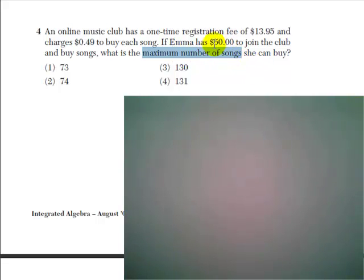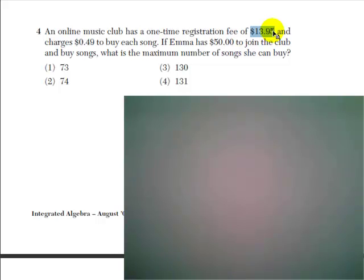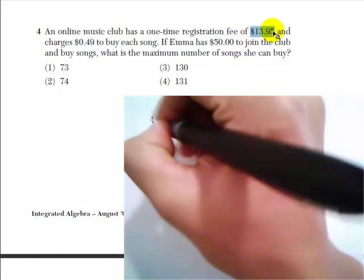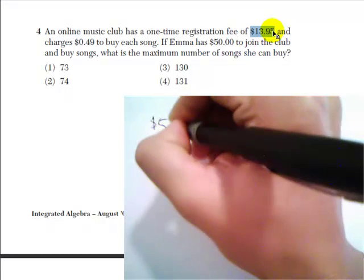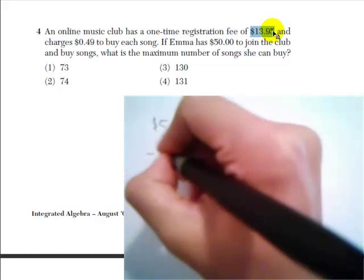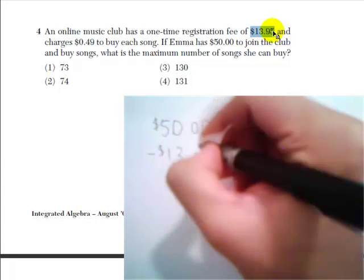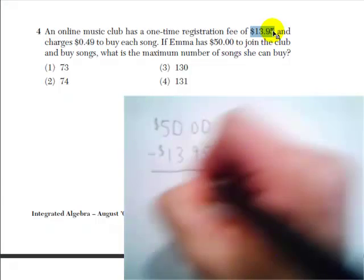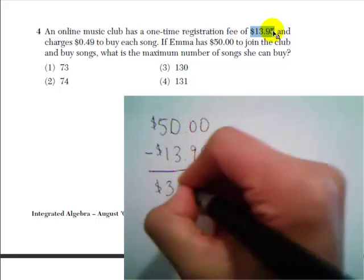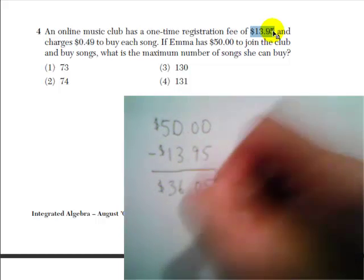Let's start with Emma's $50 here, and we know she needs to pay $13.95 to join the club. So how much money would she have after she joins the club? She has $50 to begin with, and we're going to take away $13.95, and that gives us $36.05.